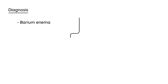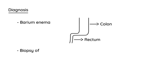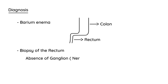Initially, a barium enema is performed — the barium will clearly show the dilated segment of the colon and the narrowed segment of the distal rectum. But the definitive diagnosis is done by biopsy of the rectum, which shows the absence of those ganglion cells. The absence of those nerve cells is the definitive diagnosis.